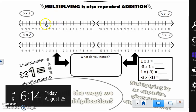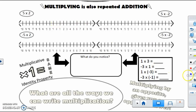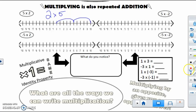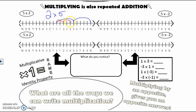Another way to look at it: I could have two groups of five. We know from the commutative property that five times two is the same as two times five. I could also show this as five groups of two on the number line — counting five jumps of two — and I still end up at positive ten.